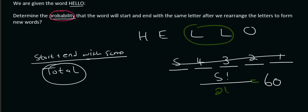So what that means is that there are 60 types of words that you could make using the word HELLO. There are 60 different combinations. So that's your total. Now we're going to do the top part, which is start and end with the same.